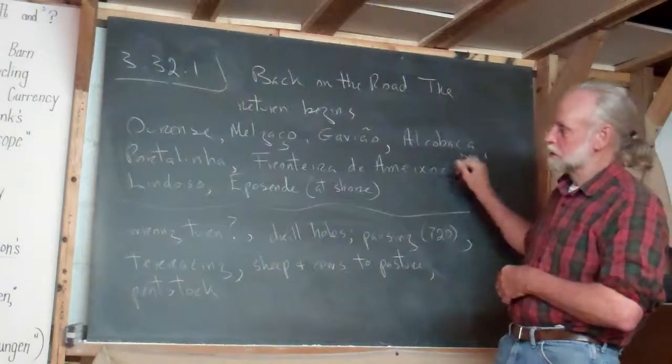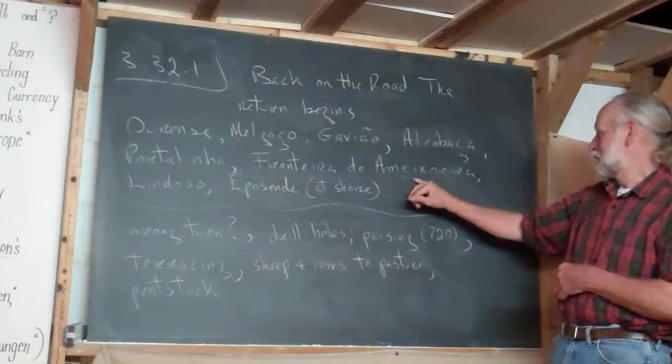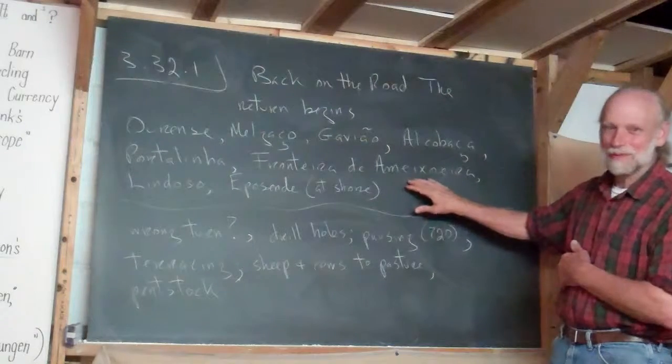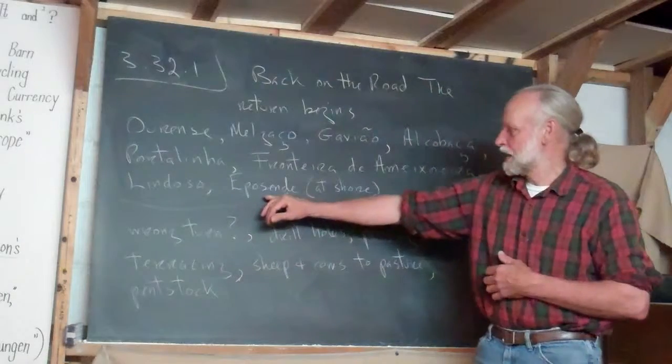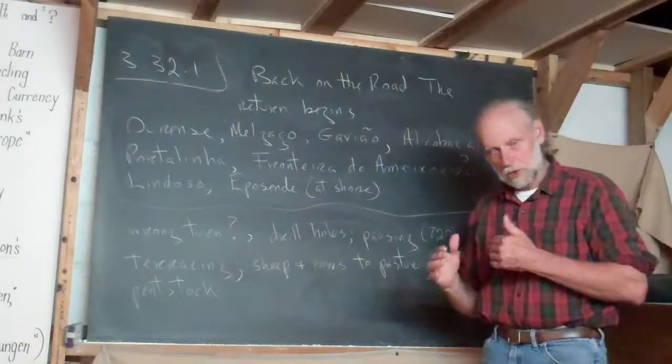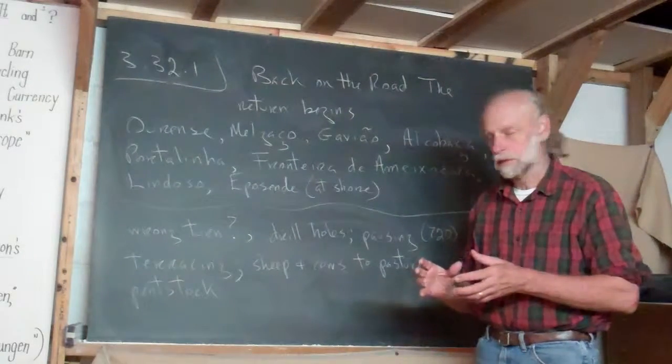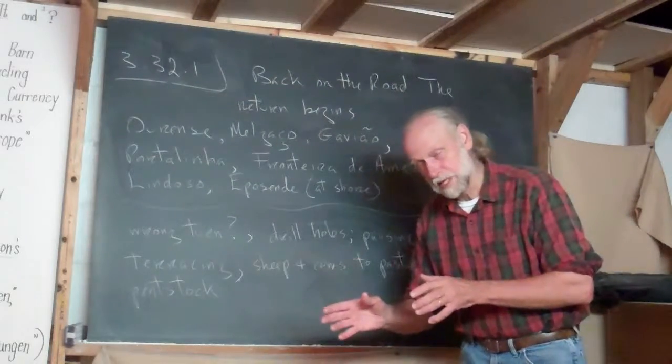Gavião, Alcobaça, Portalinha, Fronteira de Ameixueira. That would probably take some practice to say. This is Portuguese. Lindoso, and Epozenda is at the shore. You don't actually see it, but that's where we stayed.